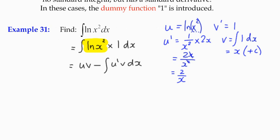And we can substitute in u and v. So u is the log of x squared multiplied by v, which is x, minus the integral of u dash, which is 2 over x, multiplied by v, which is x.